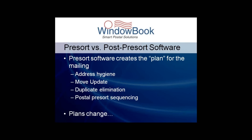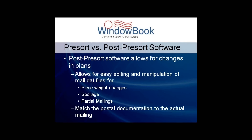Though we understand and recognize that pre-sort software is very powerful and a necessary part of the overall mailing process, we also know full well that the initial pre-sort plan can and does change, sometimes right up until the mail is being physically prepared. Through editing the Mail.Dat files, post-presort software like WindowBook's DatMail solution can make changes to the initial plan without having to go back and rerun the actual pre-sort step.